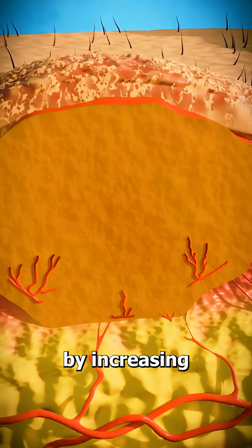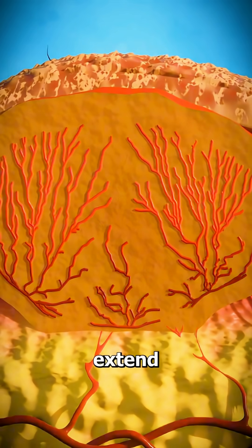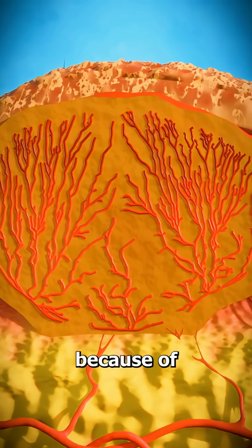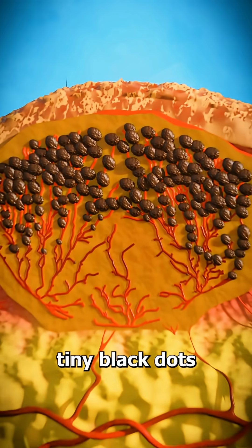The body responds by increasing blood supply to the area. But as the blood vessels extend, they sort of plug up because of how fast the wart is growing, and this makes them look like tiny black dots.